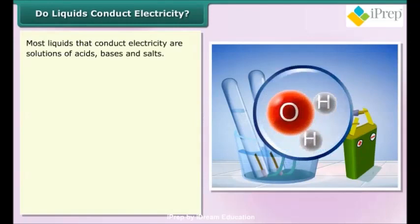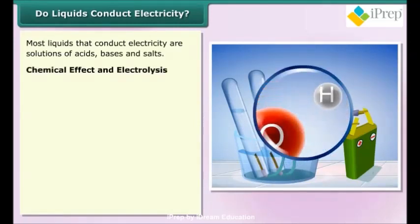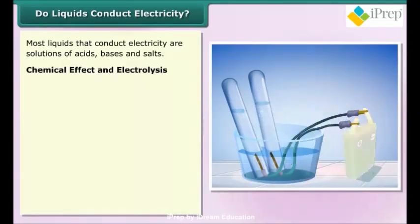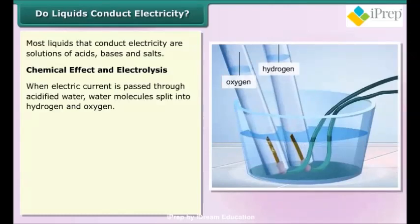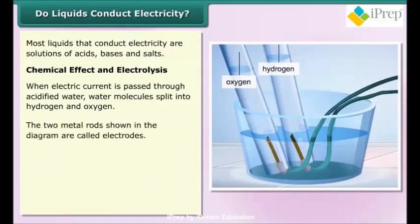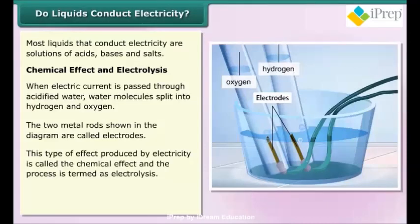Chemical effect and electrolysis: When electric current is passed through acidified water, water molecules split into hydrogen and oxygen. The two metal rods shown in the diagram are called electrodes.